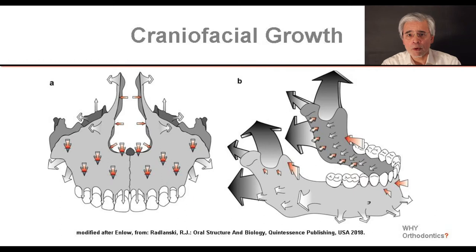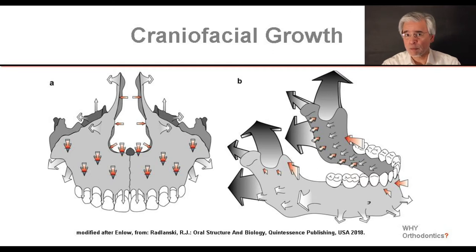The jaw bones do not just grow simply in length, width, and height — it is so complicated that I prefer to explain that in more detail in a separate video. Now we have made the most important preliminary explanations. First, we need to clarify what kind of anomaly we have found: does it affect the teeth or does it affect skeletal growth?